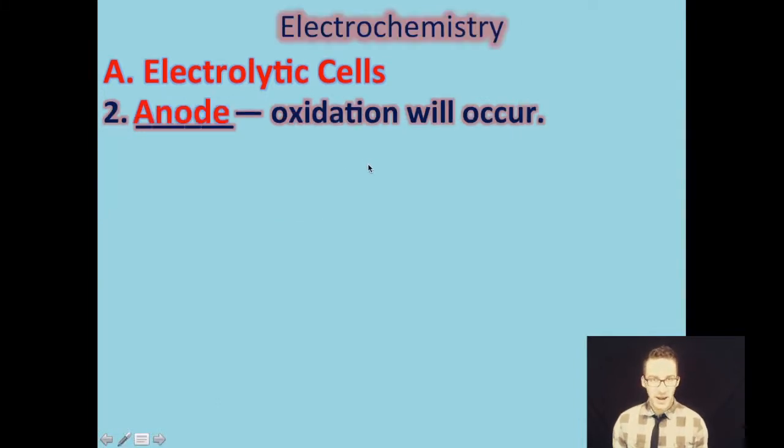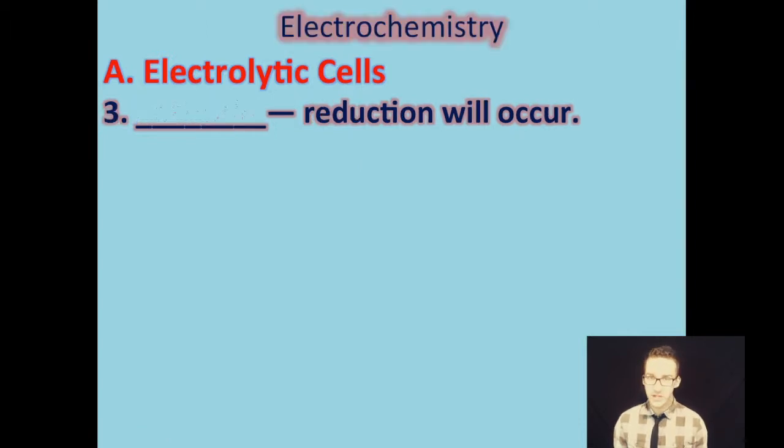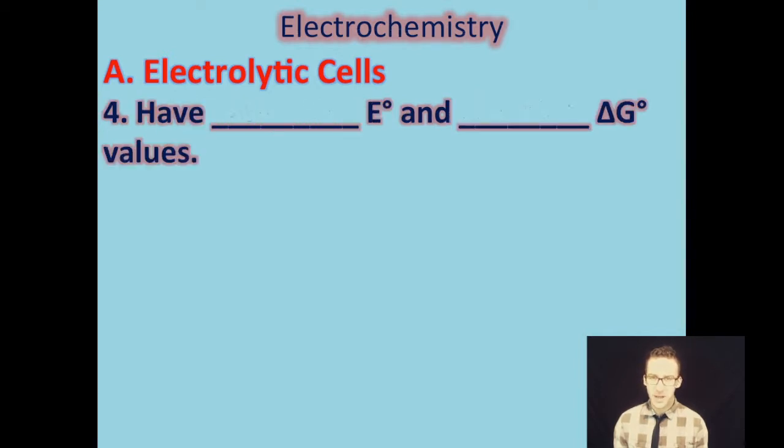Some things to keep in mind, our anode is still the place where we'll have oxidation that will occur. Reduction will also still occur at our cathode, although we'll talk about how things have changed slightly. The big thing to keep in mind here with electrolytic cells is we're going to have a negative standard cell potential and positive Gibbs free energy changes.